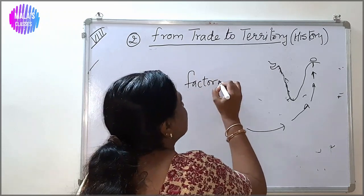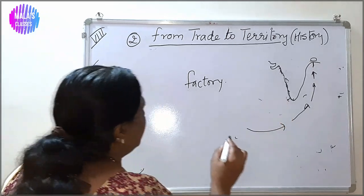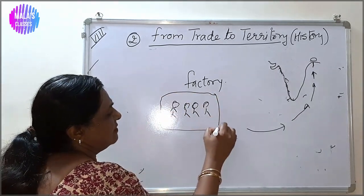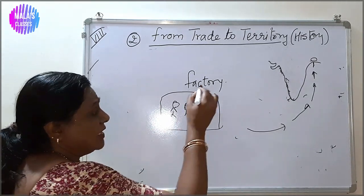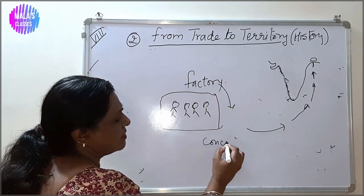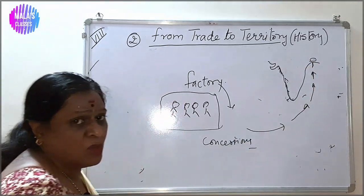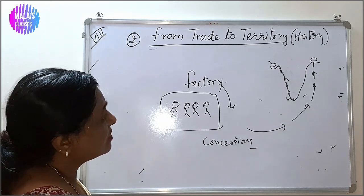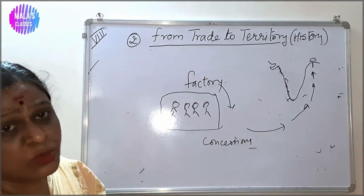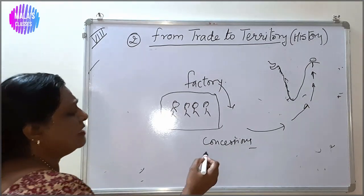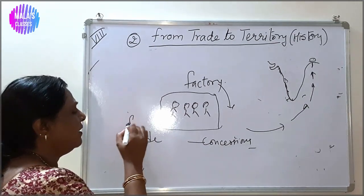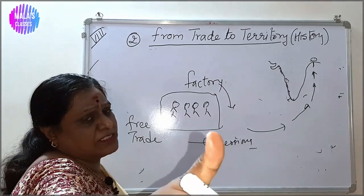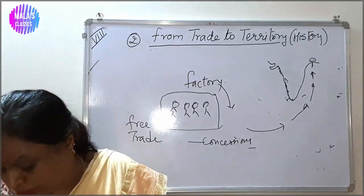The word 'factory' comes from the word 'factors.' What they did was leave their people and goods, building a kind of enclosure where people and goods were kept — these were called factories. Now to get these factories, they had to take concessions from the ruler. The ruler at that time was Alivardi Khan, and then Siraj ud-Daulah. They did not want to give too many concessions. The British asked for free trade — meaning they could come, sell their goods, make all the profit, and not pay duties. This was the kind of trade concessions they were asking for.